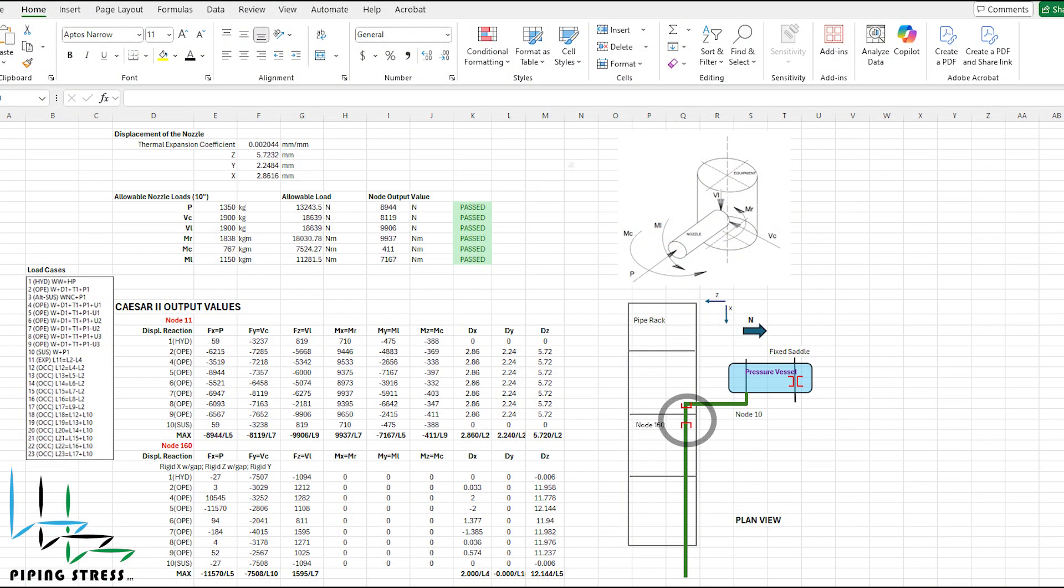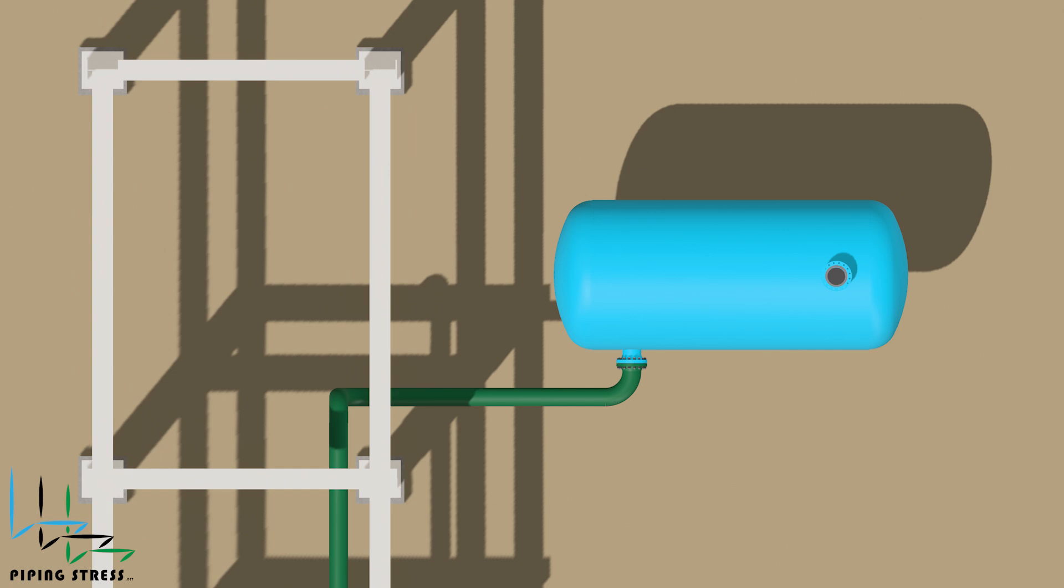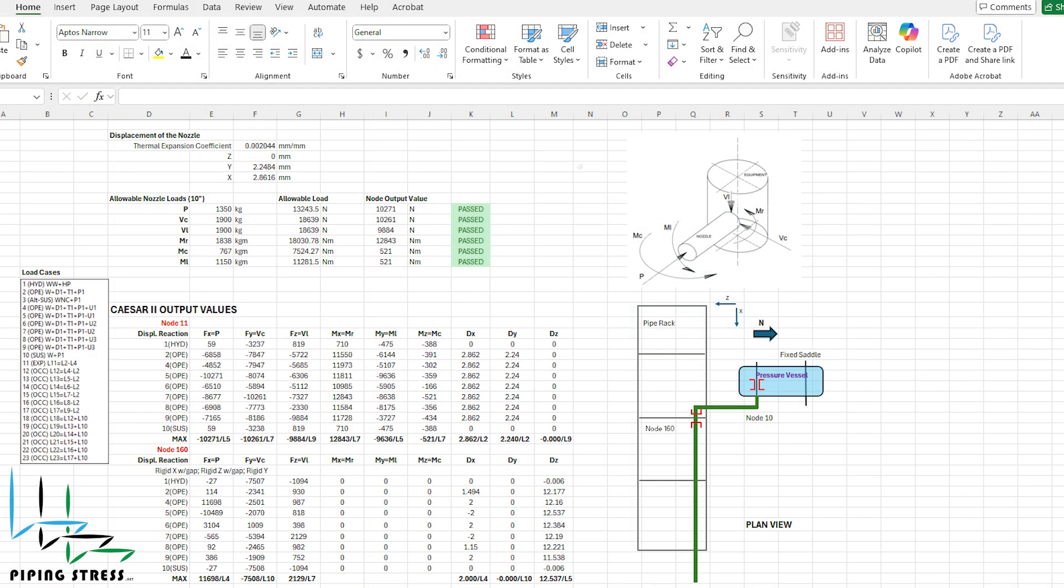When we remove the guide, you can see the results of the updated scenario. Now, let's change the position of the fixed saddle. In this case, there will no longer be any displacement of the nozzle in the z-direction. When we input this scenario into Caesar 2, we observe that the moments and forces on the nozzle are below the allowable limits.